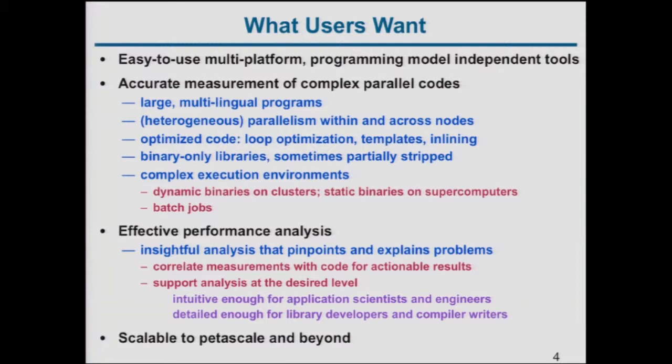The only code that makes sense to measure is optimized code. If you turn on the optimizer and get a factor-of-three improvement, it doesn't make sense to turn it off to measure performance. You want to compile flat out the way you'd run it as a production code, and deal with the fact that some libraries are available only in binary form, sometimes partially stripped like GPU code.